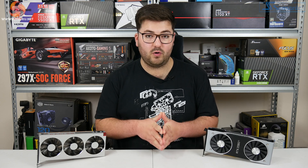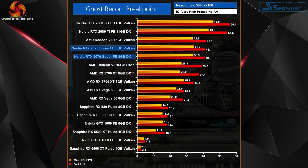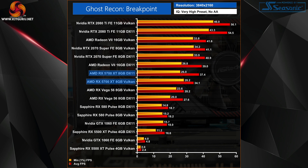The 4K performance data really reinforces the point about video memory: only the RTX 2080 Ti and Radeon VII see performance improved by more than a single frame when using Vulkan instead of DX11. Cards like the RTX 2070 Super and Vega 56 are technically faster with Vulkan, but you'd never know it from playing the game. Even AMD's RX 5700 XT sees DX11 outperform Vulkan by almost 10% at this resolution. The caveat is that almost no GPU apart from the 2080 Ti offers a truly playable experience at 4K here, but the trend of Vulkan leading is clearly flipped on its head at 4K.